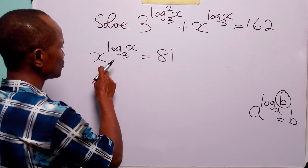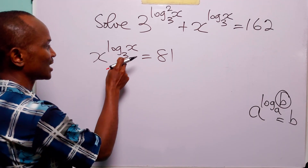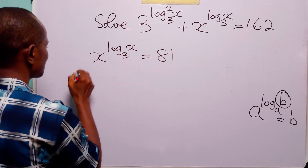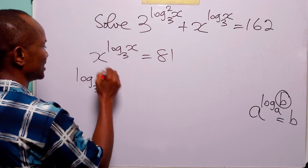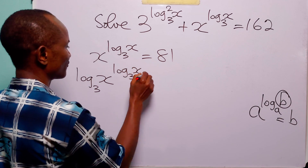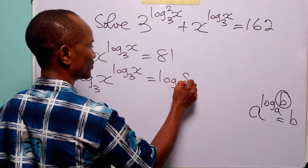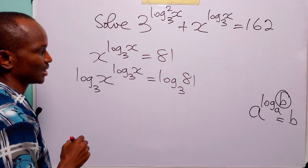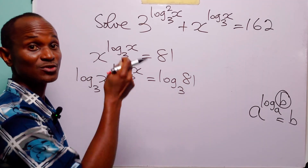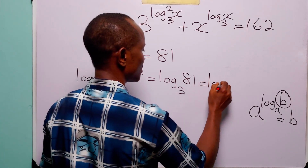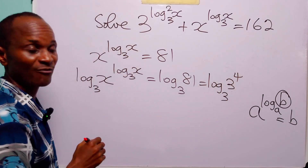The next step is to take log of both sides, and we are going to take log to base 3. So we have log to base 3 of x to the power log to base 3 of x, equal to log to base 3 of 81. Since 81 is equal to 3 to the fourth power, the right hand side becomes log to base 3 of 3 to the power 4.